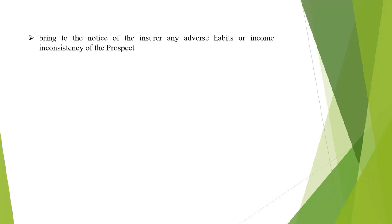The agent should bring to the notice of the insurer any adverse habit or income inconsistency of the prospect. When dealing with the customer, the agent may come to know about bad habits or health issues of the prospect, and it is the duty of the agent to disclose that information to the insurance company. If the agent hides such information — for example to protect his commission — that constitutes a violation of the code of conduct and his or her license may be cancelled.